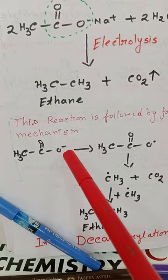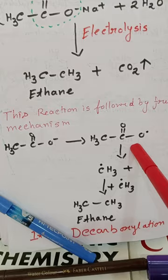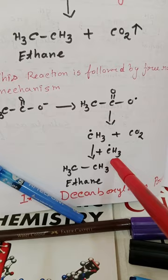Acetate converts to acetate radical, which then gives methyl radical and carbon dioxide. The methyl radical reacts with another methyl radical to produce ethane.